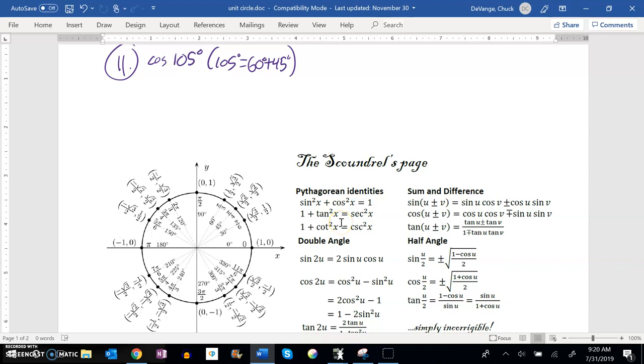This is Math 142 final practice. Question number 11: cosine of 105 degrees, and we're supposed to find the exact value. We're told how 105 can be broken up: 60 plus 45.